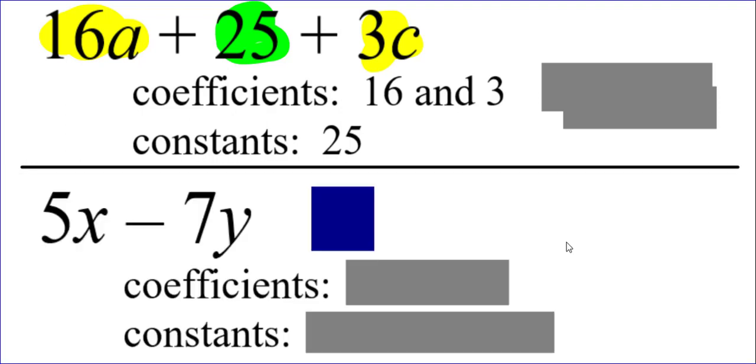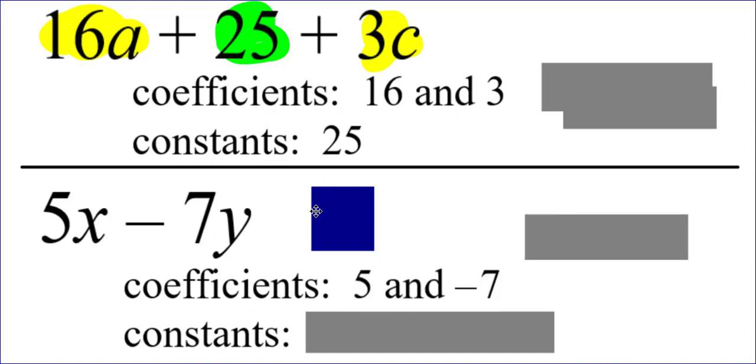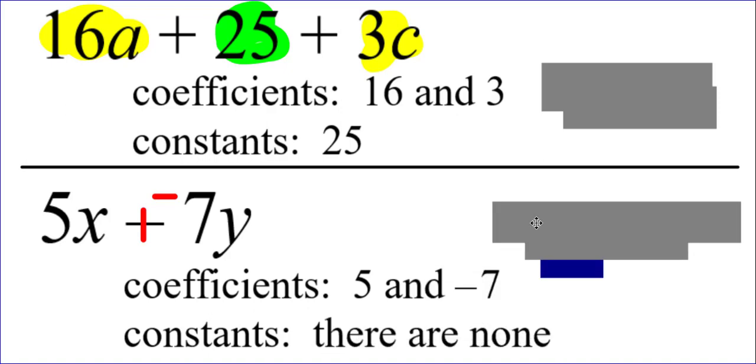The other example we were looking at, 5X minus 7Y. The coefficients are 5 and negative 7. Again, we make subtraction adding the opposite before we try to identify terms and also before we try to identify coefficients or constants. Speaking of constants, does this have any constants? No, it does not. There were no numbers that didn't have any variables at all. That's why this algebraic expression had no constants.